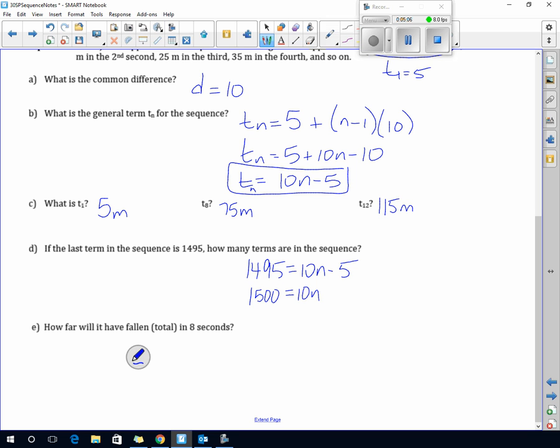How far will it have fallen in 8 seconds? 8 seconds total, that's the key here. We need to find S8, not term 8. That is the formula. Well, we know the last term, we know T8 is 75 from the previous question. So it's going to be 8 divided by 2 times term 1, which is 5, plus 75. So that's 80 times 4, which is 320 meters.